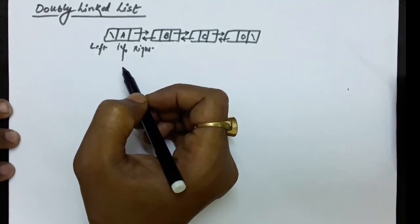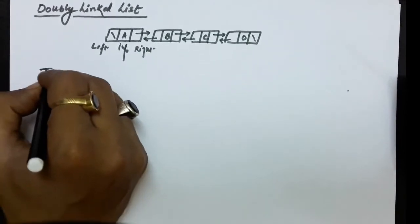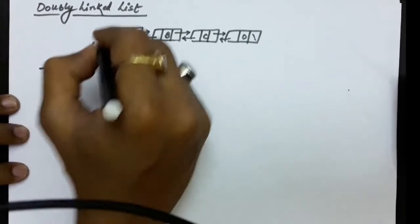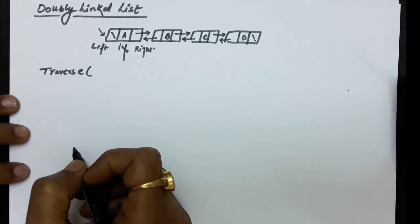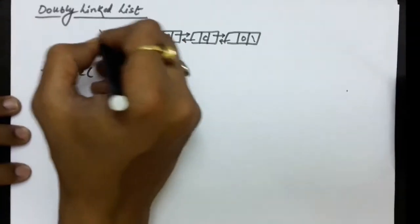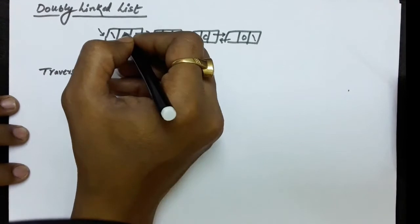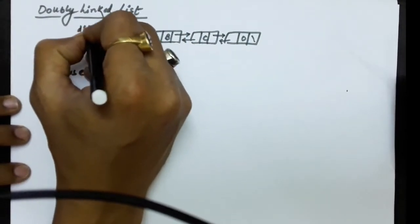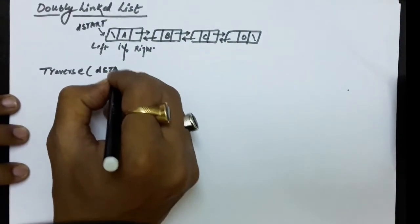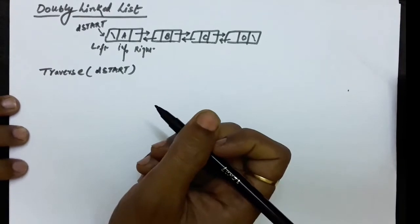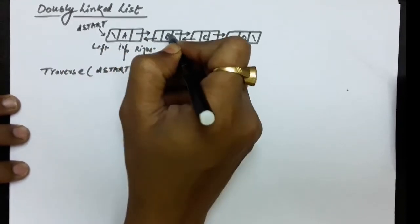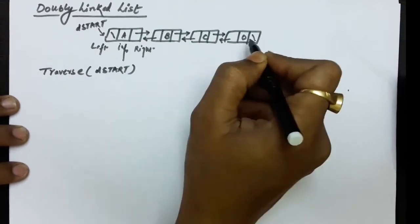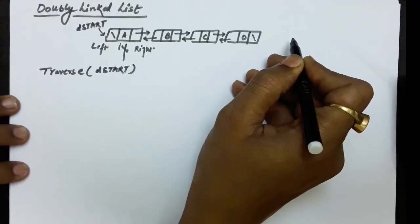Now let us write the algorithms for the various operations in the doubly linked list. To start with, let us write the traversal algorithm. Traversal means visiting every node and printing the information of every node. There is an external pointer keeping the address of the first node, which is the identification of the doubly linked list. Let us call it D_start. D_start is the address of the first node. We start from this node, print information, go to the next node, and when we move right and reach null, that signals we stop.